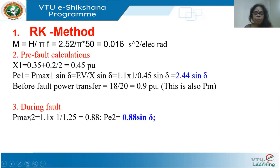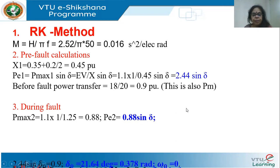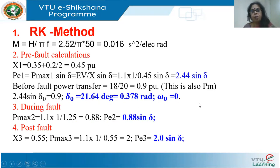During the fault, P_max is 1.1 × (1/1.25) = 0.88. The 1.25 is the reactance when you short the middle of one of the lines — you find the transfer impedance, which works out to 0.88. So the expression for P during fault is 0.88 sin δ. The initial value δ₀ is found by equating 2.44 sin δ = 0.9, giving δ₀ = 0.378 radians, and ω₀ = 0.